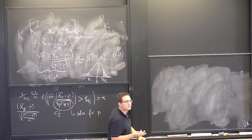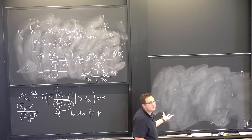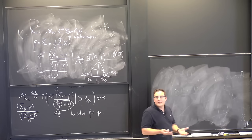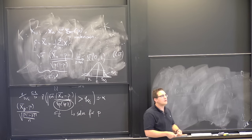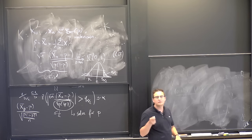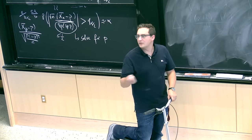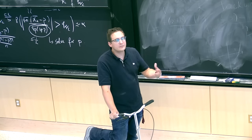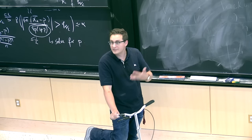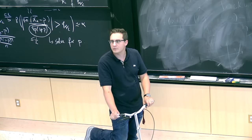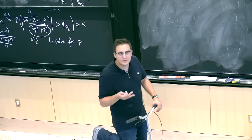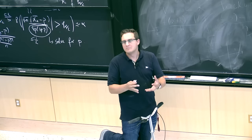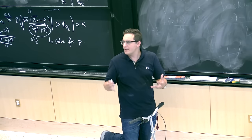Sometimes there are complicated distributions, but as long as they don't depend on unknown parameters, we can simulate from them and compute q_{α/2} for any alpha. That's what we're trying to do: find pivotal distributions. How do we take xn-bar, a good estimate, and turn it into something that, exactly or asymptotically, does not depend on any unknown parameter?